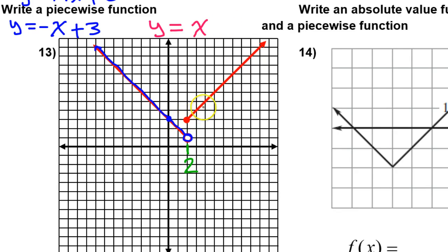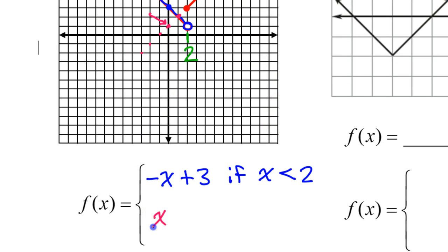So what would happen if I kept going? As I go to the left, this is going down one, left one. If I did more of that — down one, left one, down one, left one — that will be the y-intercept. Positive one. So the equation of the line that goes through this is y equals x plus one. That x plus one is going to be my second piece of the piecewise function.